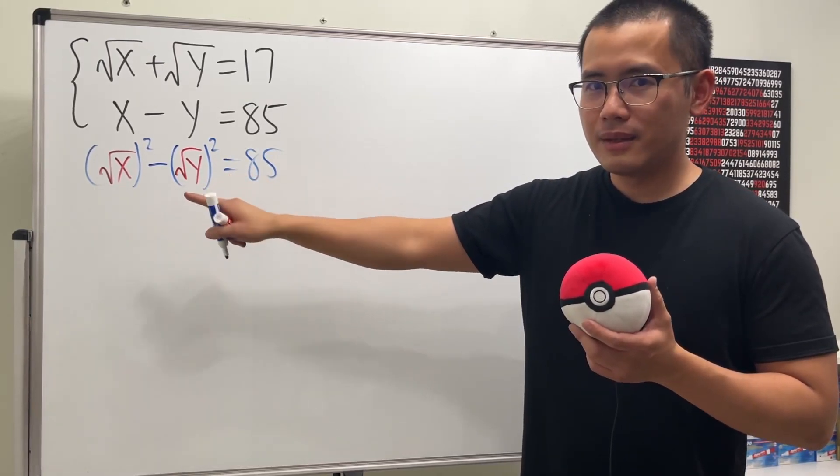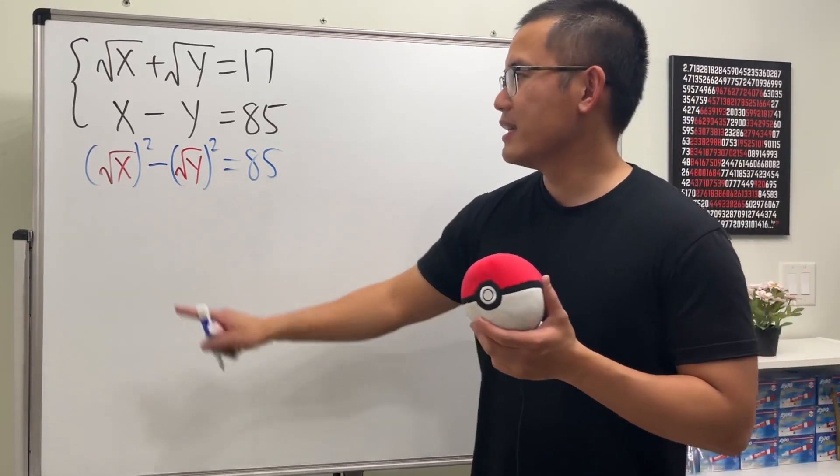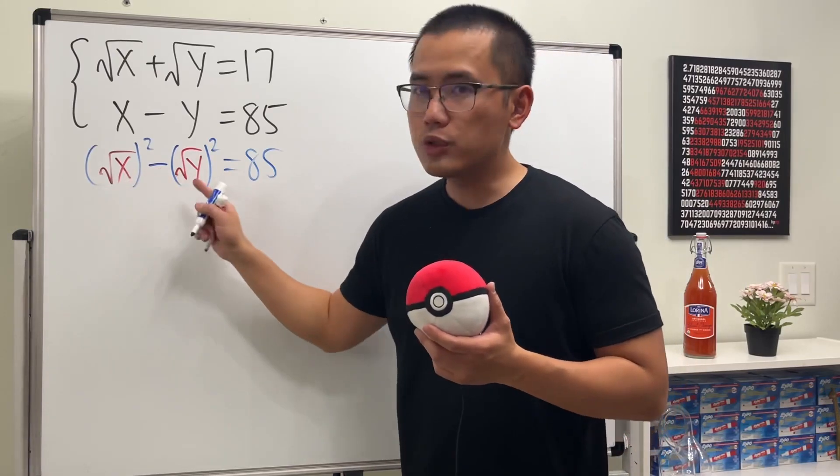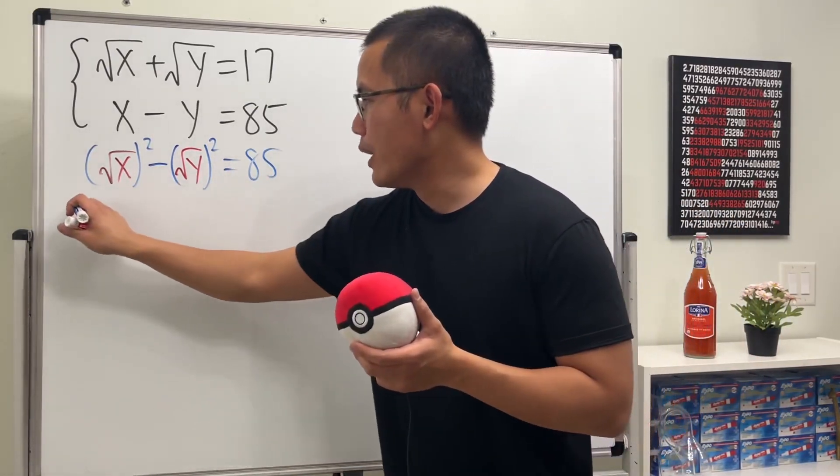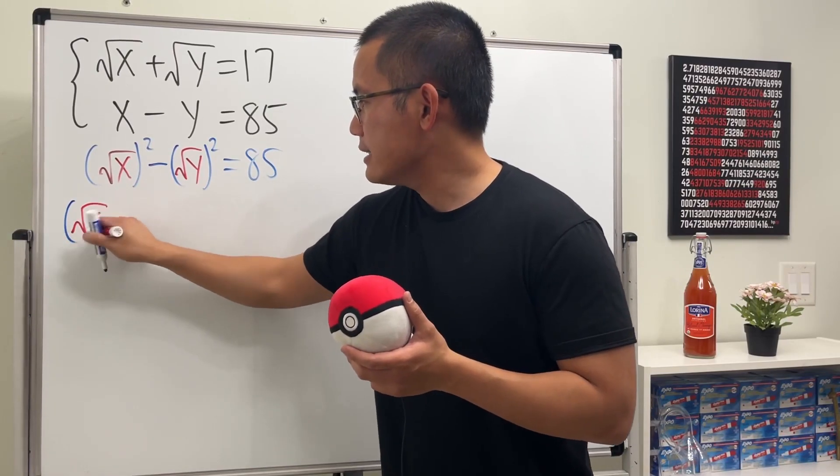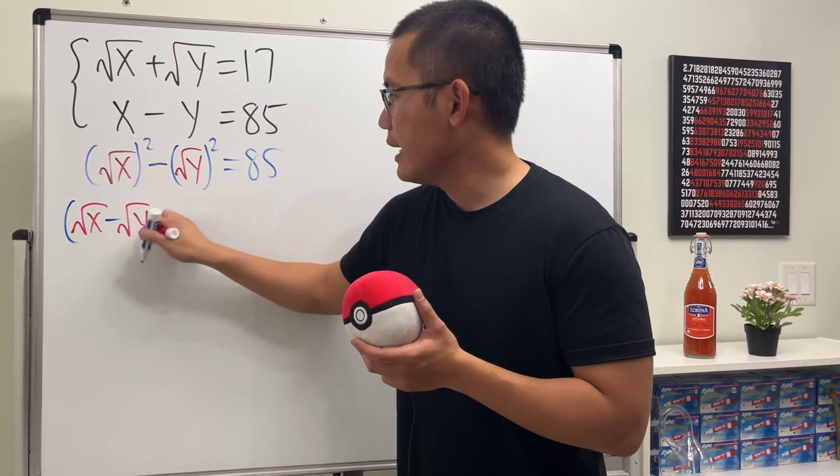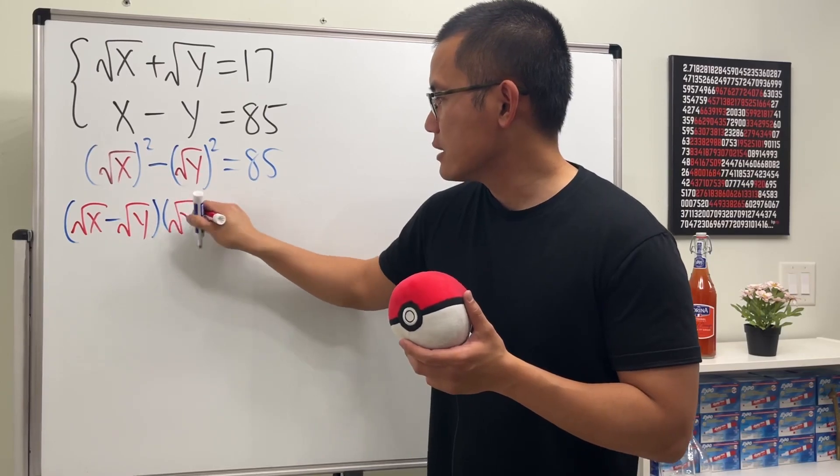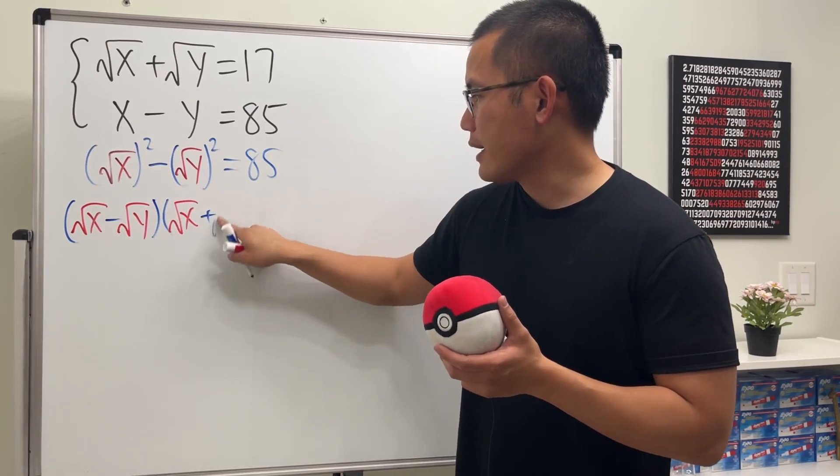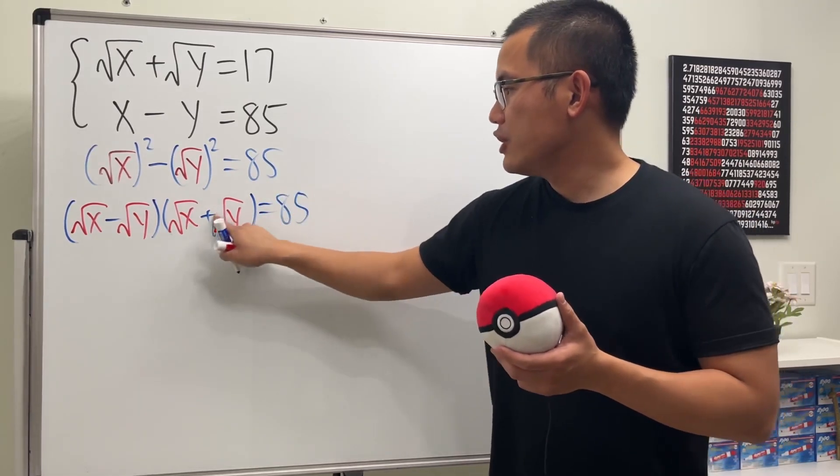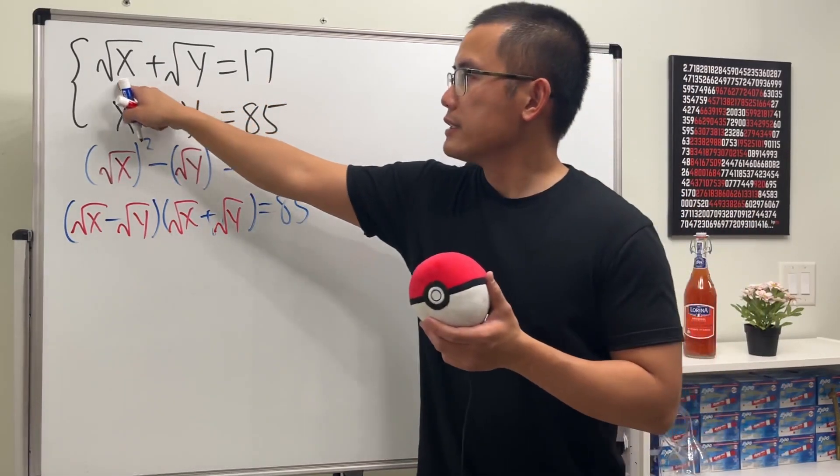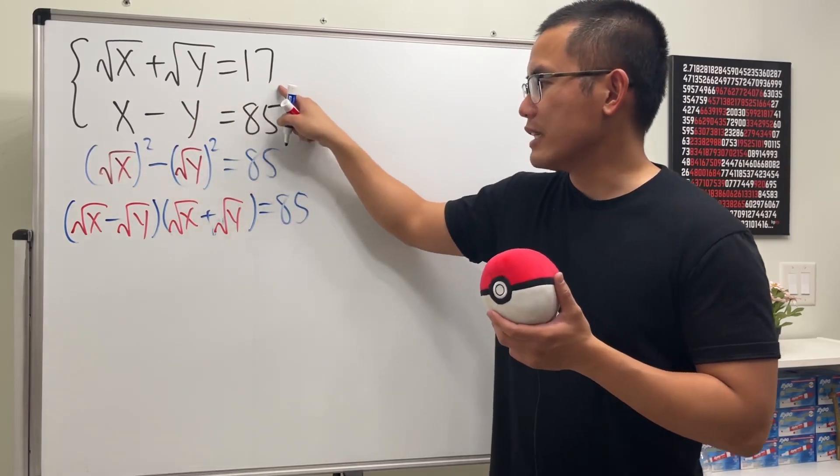Why did we do that? Yes, you are right! This is now a difference of two squares, so we can do this by factoring. We can factor this and we will end up with square root of x minus square root of y times square root of x plus square root of y, and then that will give us 85. And check this out, we do know square root of x plus square root of y is equal to 17.